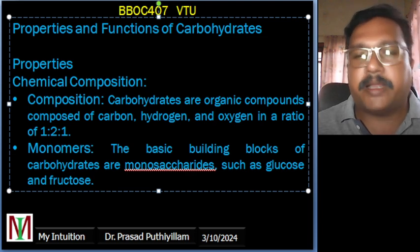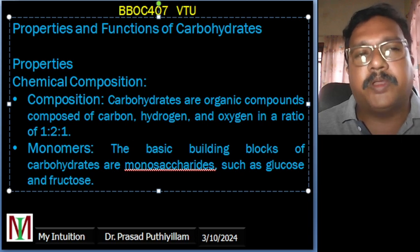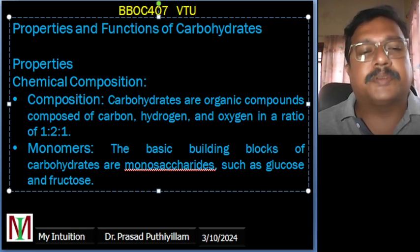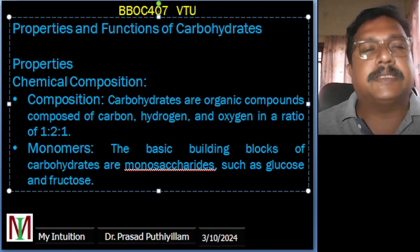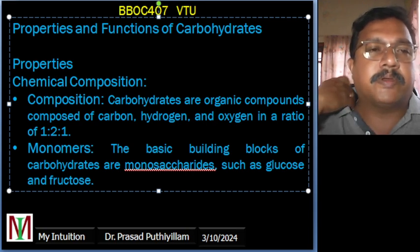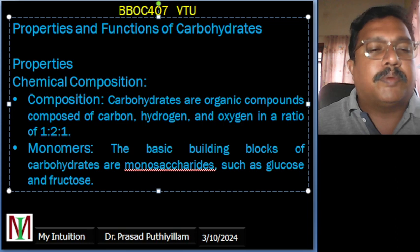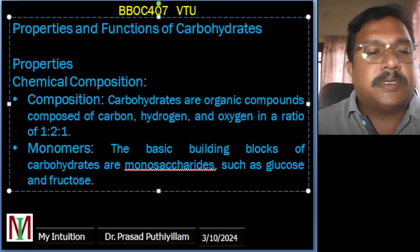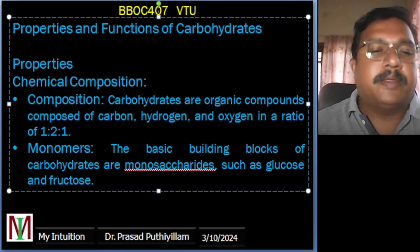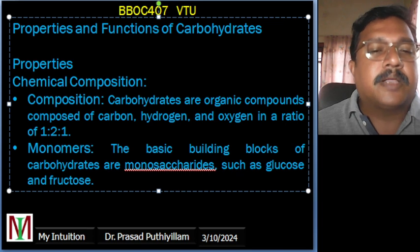The first property is chemical composition. Carbohydrates belong to a class of molecules called organic compounds, meaning they mainly contain carbon atoms in their structure. Any molecule which contains carbon we classify as an organic compound. The elements and their ratios are very important.